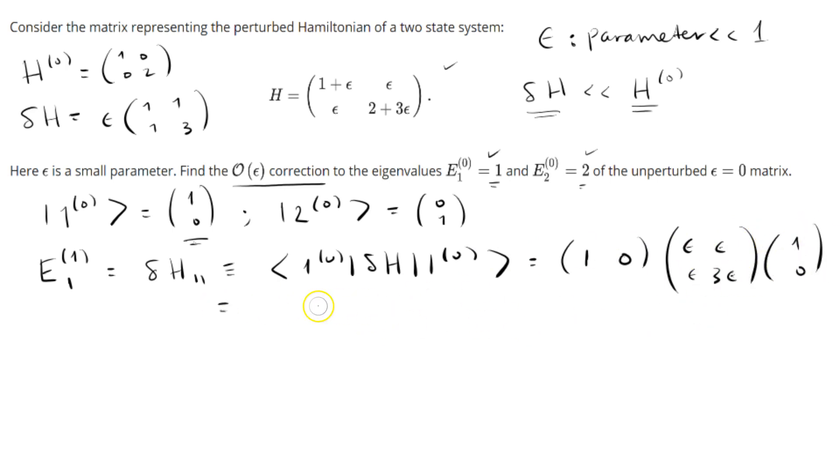So what does this give us? Let's multiply the right first. This is 2-by-2 times 2-by-1, so the result is going to be 2-by-1. We get epsilon times (epsilon; epsilon). Then we multiply with the bra, which gives us just epsilon. There we go, pretty simple.